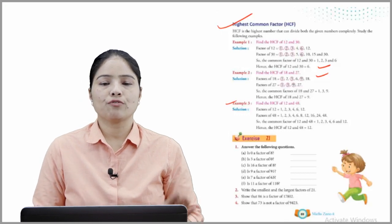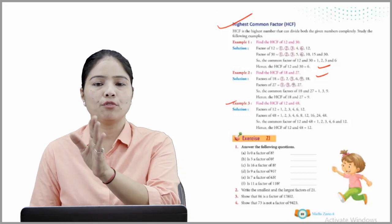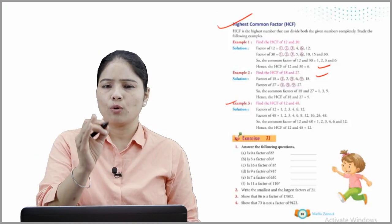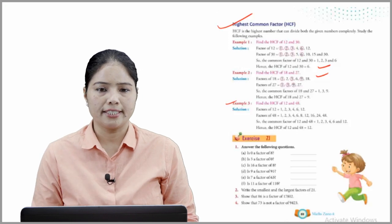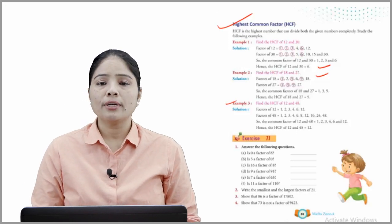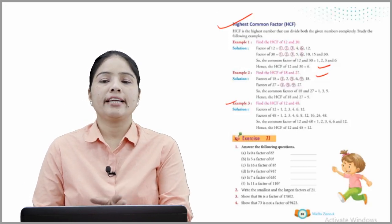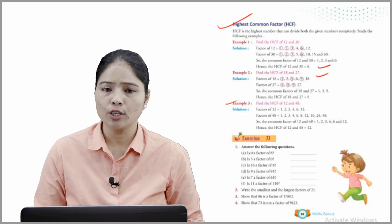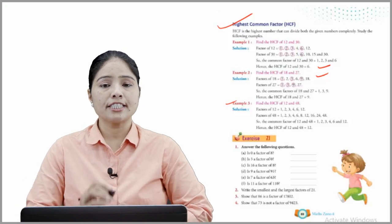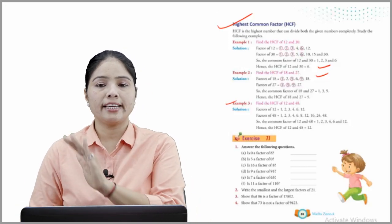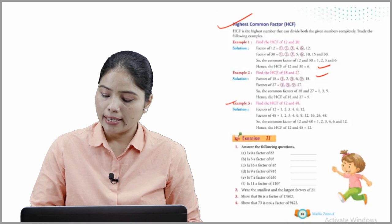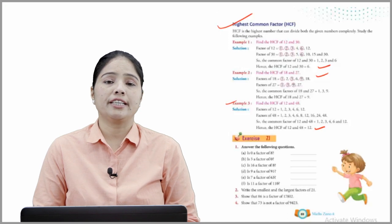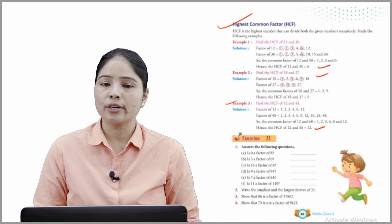Example 3: Find the HCF of 12 and 48. Factors of 12 are 1, 2, 3, 4, 6, and 12. Factors of 48 are 1, 2, 3, 4, 6, 8, 12, 16, 24, and 48. The common factors of 12 and 48 are 1, 2, 3, 4, 6, and 12. Hence the HCF of 12 and 48 is 12 — 12 is the highest common factor of 12 and 48.